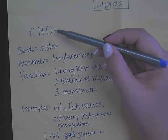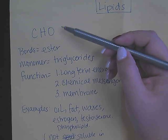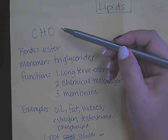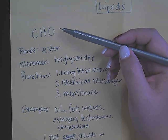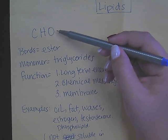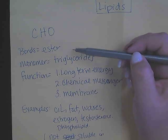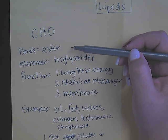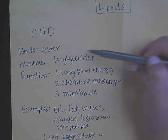We had already gone over that lipids — their basic chemical structure, if you're asked to define their chemical structure, is carbon, hydrogen, and oxygen in no specific ratio. The bonds that hold lipids together are called ester bonds.